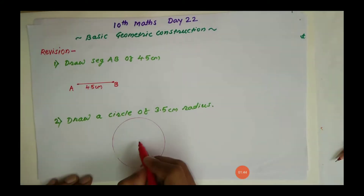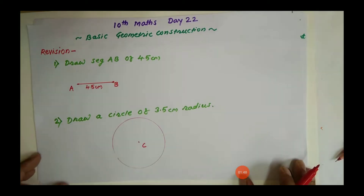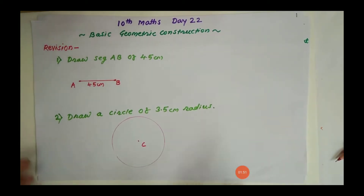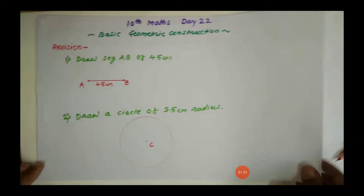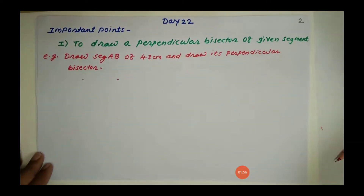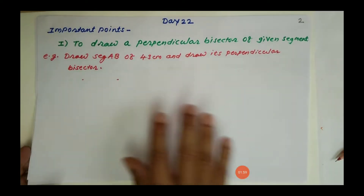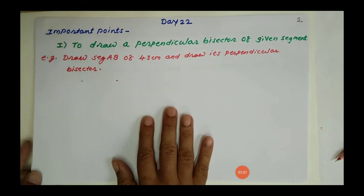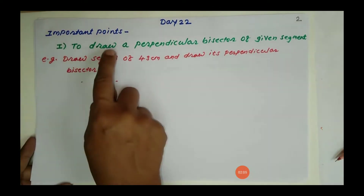You can name the center — let us call it C. Now some important points are given and the constructions are shown in your activities. The first construction is to draw a perpendicular bisector of a given segment.